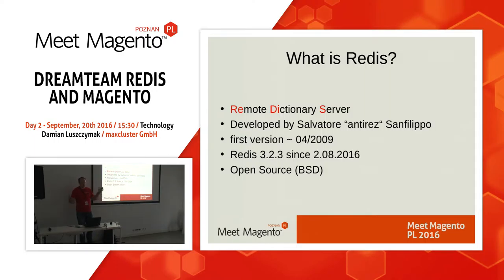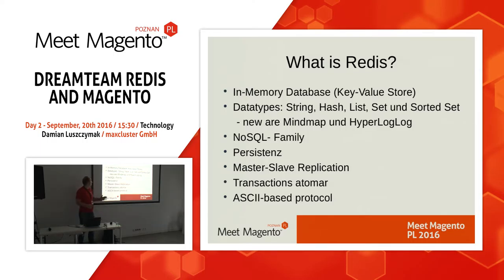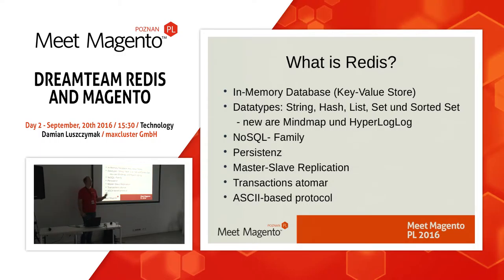What is Redis? Redis, the remote dictionary server, was developed by Salvatore Sanfilippo. The first version was in April 2009. The stable version is 3.3 since August this year. Everything is open source. At the end, it's a key-value store — an in-memory database. There are special data types: string, hash, list. Redis falls into the NoSQL category.